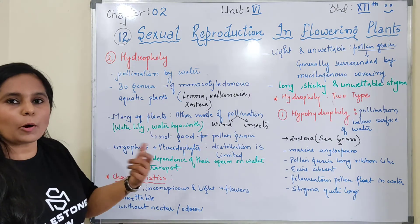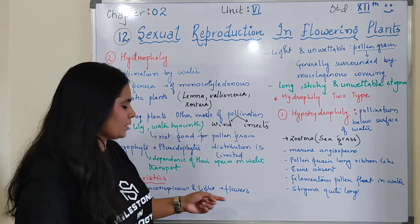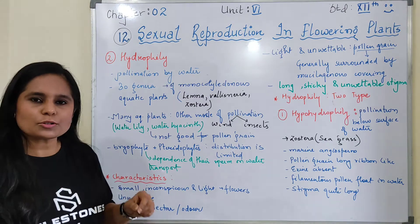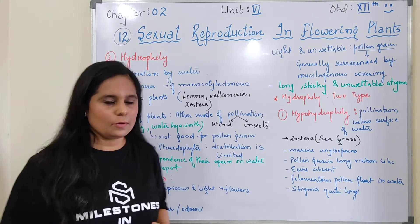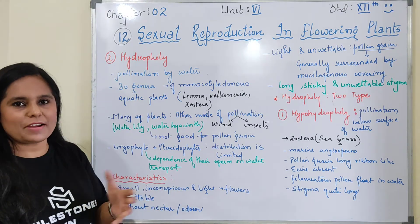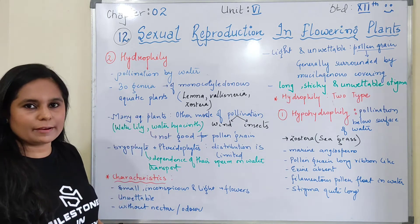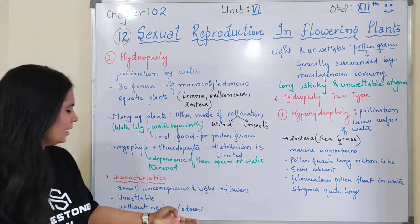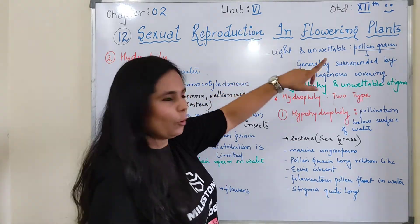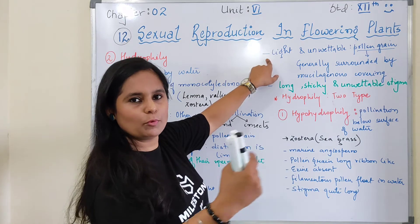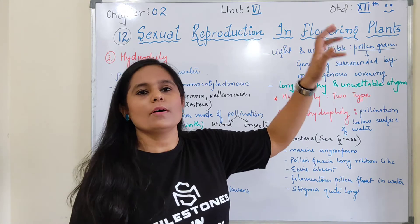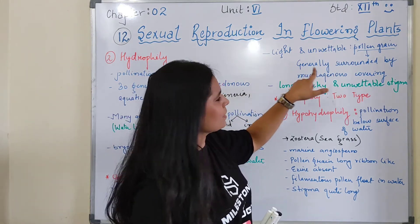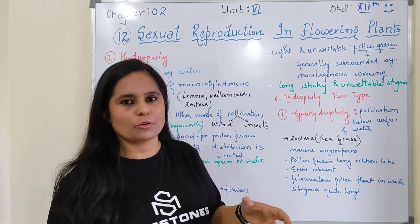The characteristics of water-pollinated plants include: small, inconspicuous, and light flowers. The flowers will be small and they will get pollinated. There will be no nectar and no odor - since it is an abiotic pollinator, the flower does not need these. Pollen grains should be light so they can be easily moved, and they should also be unwettable, because moisture can degrade them and stop their activity. So they are generally surrounded by a mucilaginous covering so that the pollen grain does not get wet.